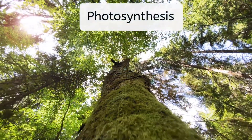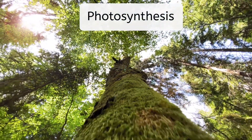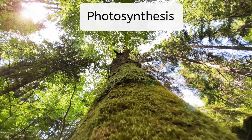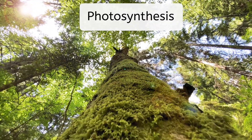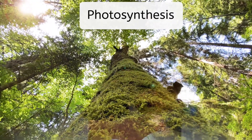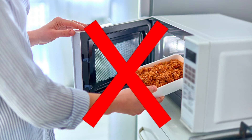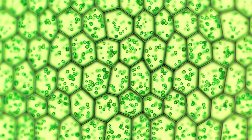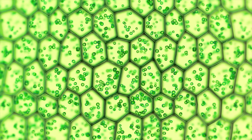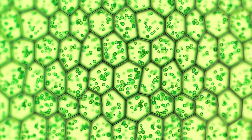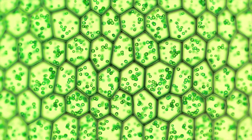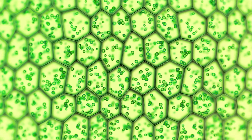Plants are capable of making their own food through a process called photosynthesis. And by making their own food, we don't just mean heating up a frozen dinner! You'll learn more about the process of photosynthesis in a later unit, but for today, we'll focus on how the cells of a plant make this process possible.